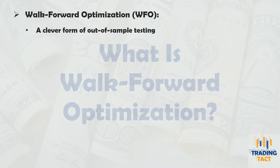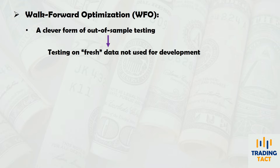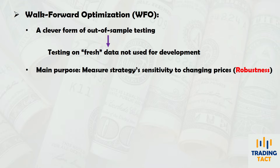Walk-forward optimization is a clever extension of traditional out-of-sample testing, which refers to testing your strategy on data not previously used for development. It is a simple yet effective means to quantify your strategy's sensitivity to changing prices, which is a strong predictor of future performance.